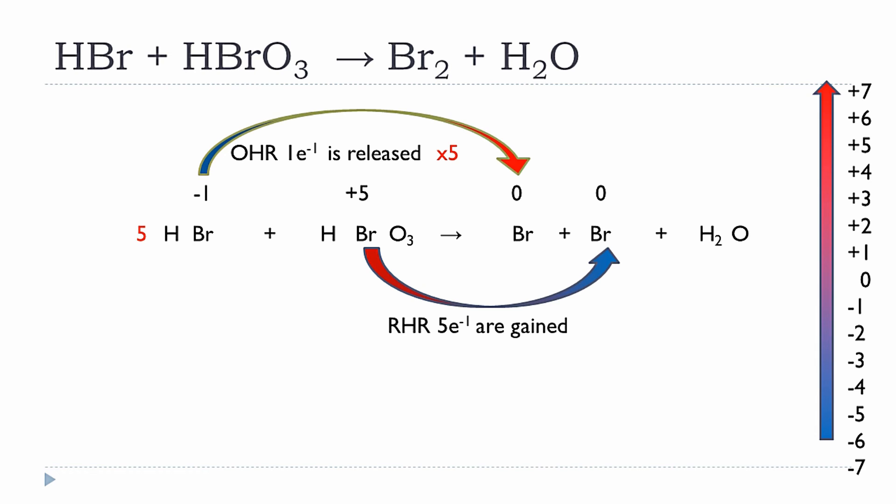Now the electron transfer is balanced. Since we added a coefficient of five for HBr, we also need a coefficient of five for the bromine atoms formed from HBr — giving 5Br on the product side.